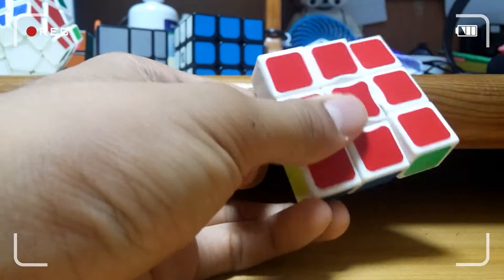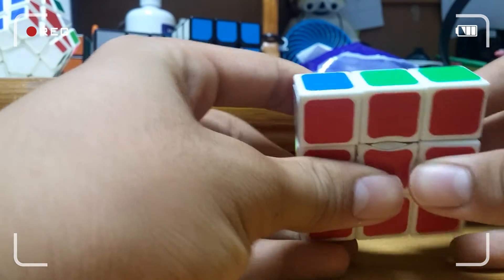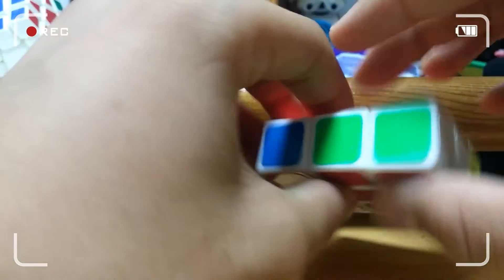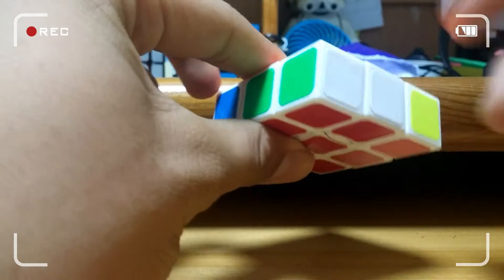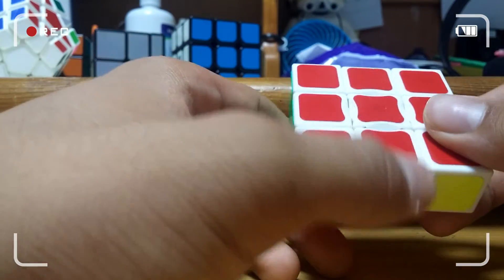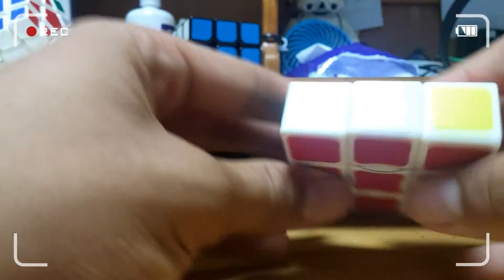And the other Rubik's is like this one. Just one layer. This Rubik's just has one layer, but it's pretty creative which you can make it like this.